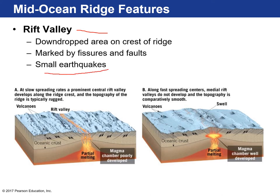Not every mid-ocean ridge is the same — their seafloor features change depending on the speed at which plates move. At slow spreading rates in a divergent plate boundary, you'll have a very prominent rift valley with a low-lying area at the center where volcanic eruptions occur, with a lot of normal faults forming very jagged terrain. At slow spreading ridges, the spreading rate is between 2 and 4 centimeters per year. At fast spreading ridges, it can be anywhere between 14 to 18 centimeters per year.